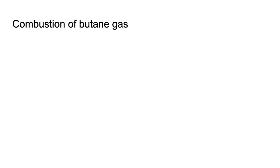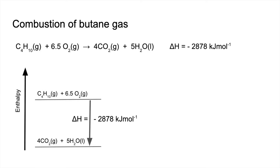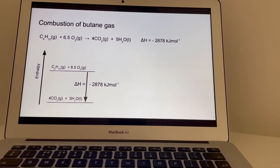Let's think about an actual reaction most people are familiar with: the combustion of butane gas, the reaction that takes place in a handheld lighter. Butane reacts with six and a half moles of oxygen to combust completely, producing four moles of CO₂ and five moles of H₂O. The enthalpy change for this reaction is minus 2878 kilojoules per mole of butane combusted — exothermic. The enthalpy diagram shows the reactants starting higher, with that delta H value representing the difference between the enthalpy of the reactants and the products.